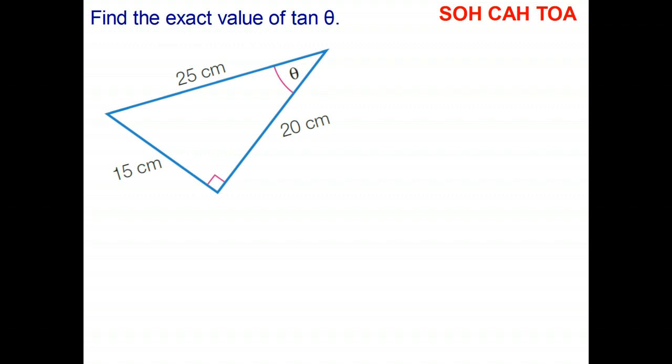So have a look at this question first. The question is: find the exact value of tangent of theta. Looking at the diagram, there's angle theta, it's a right angle triangle, and the first thing we're going to do, because it's the first thing we always do, is we're going to identify the opposite, adjacent, and hypotenuse.